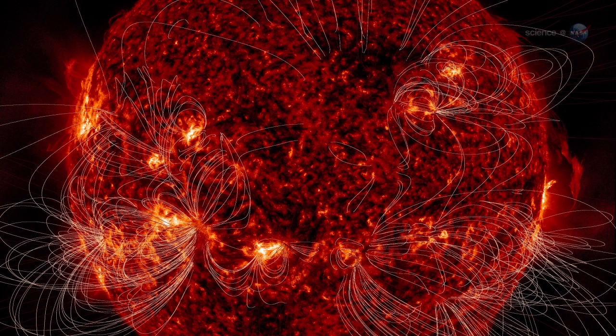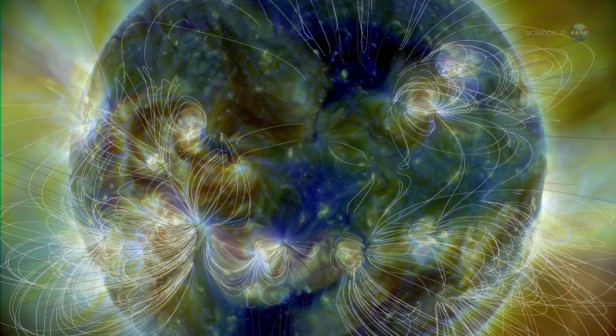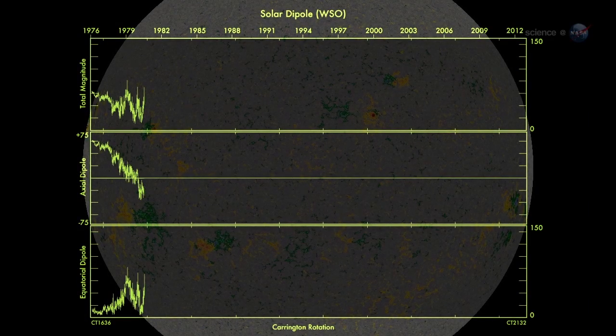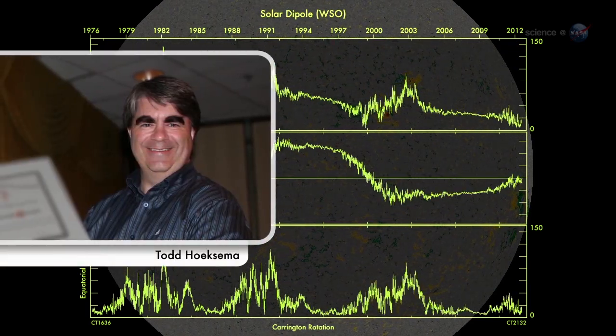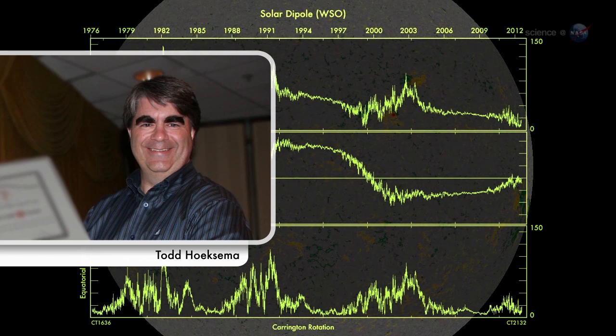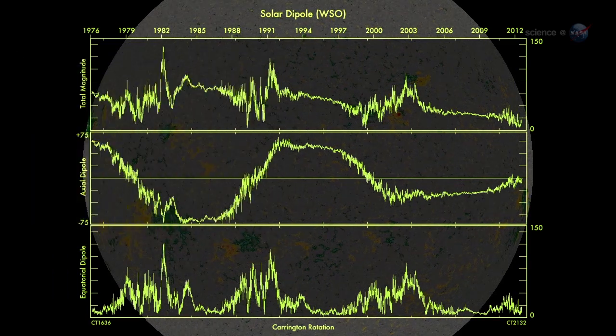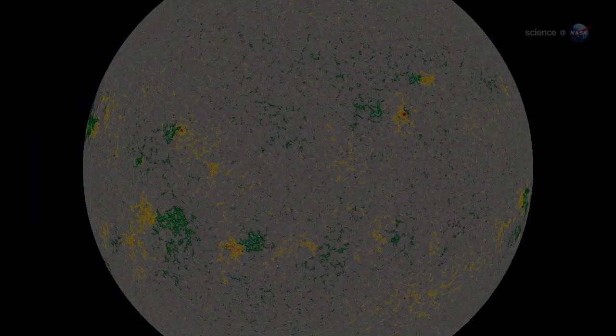According to measurements from NASA-supported observatories, the Sun's vast magnetic field is about to flip. It looks like we're no more than three to four months away from a complete field reversal, says solar physicist Todd Huxama of Stanford University. This change will have ripple effects throughout the solar system.